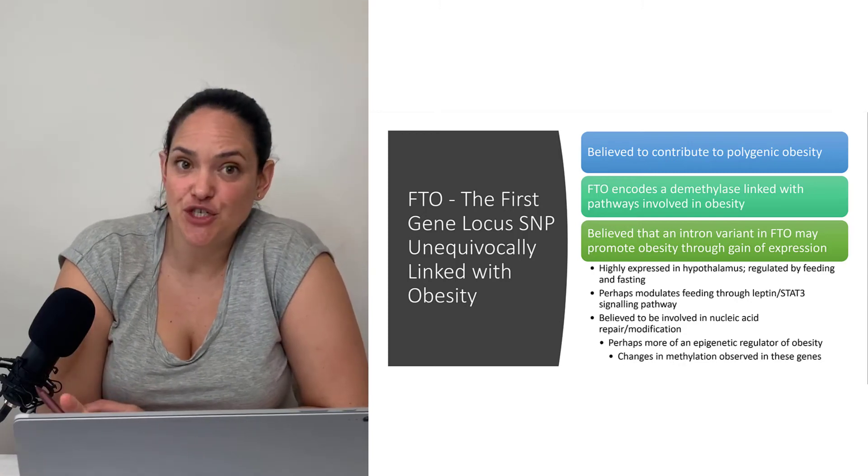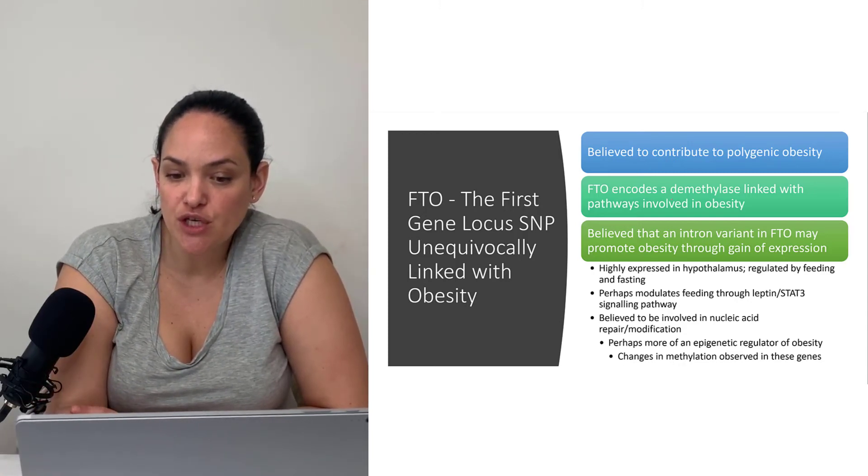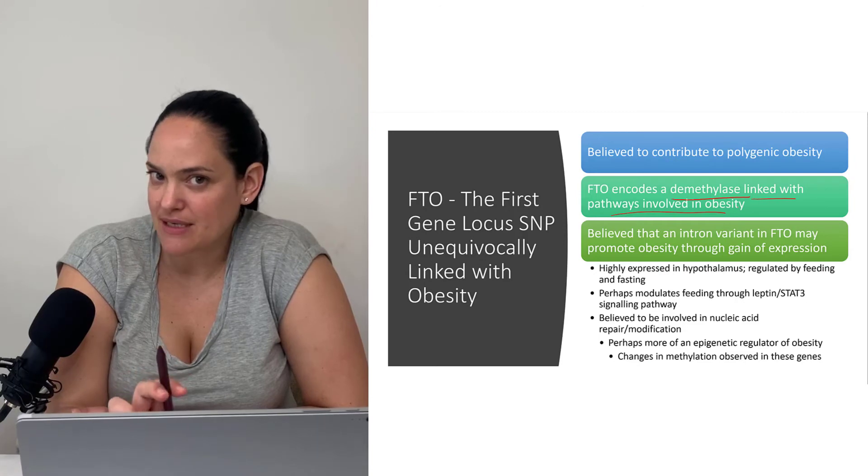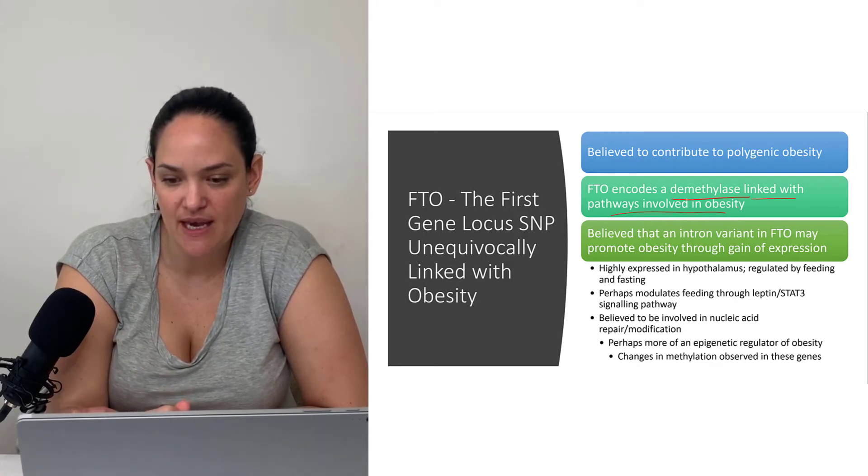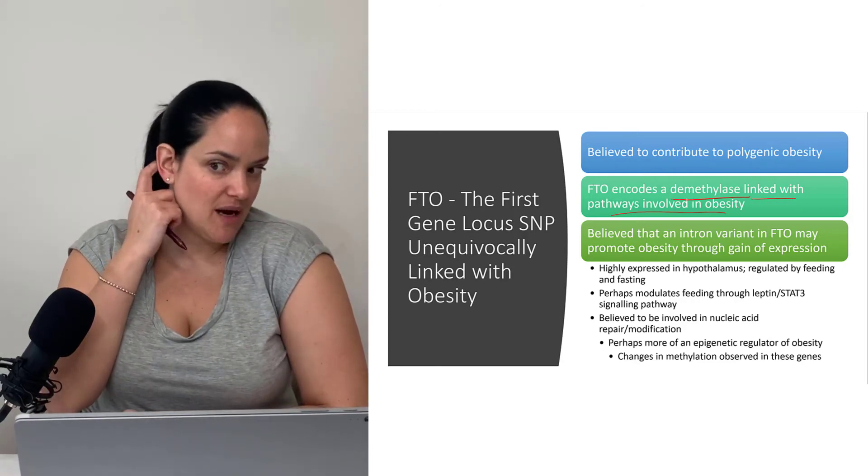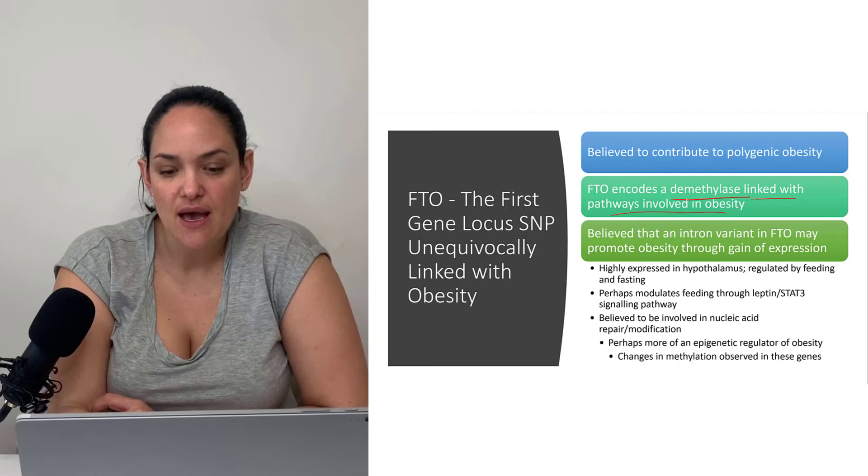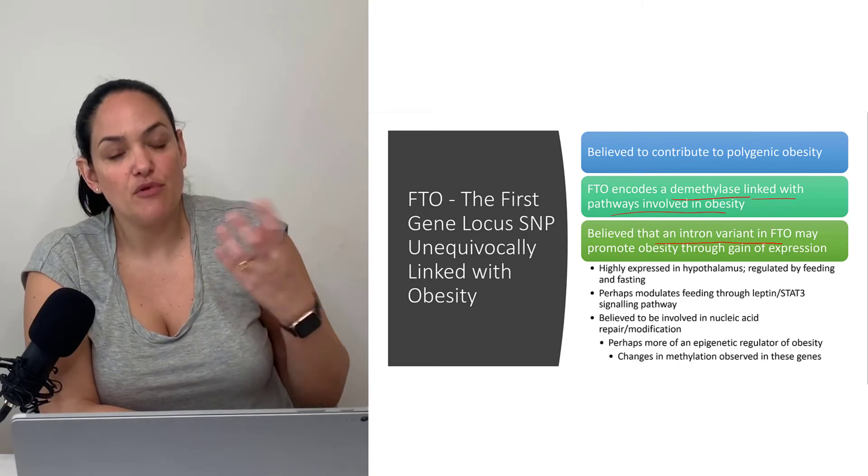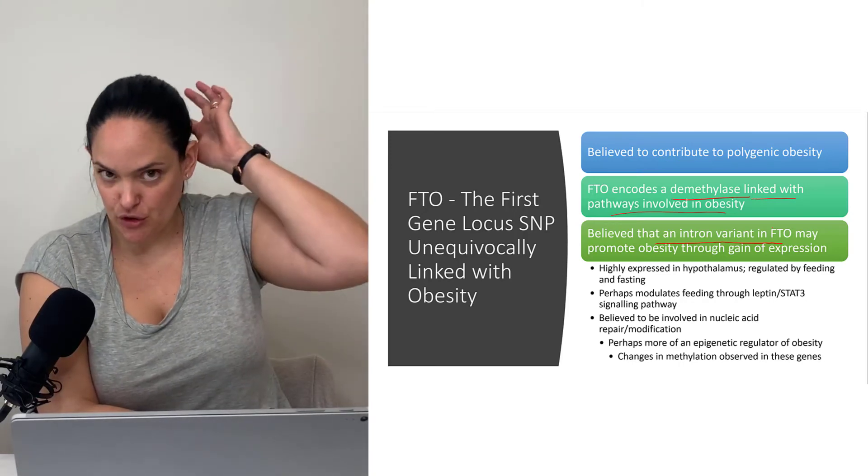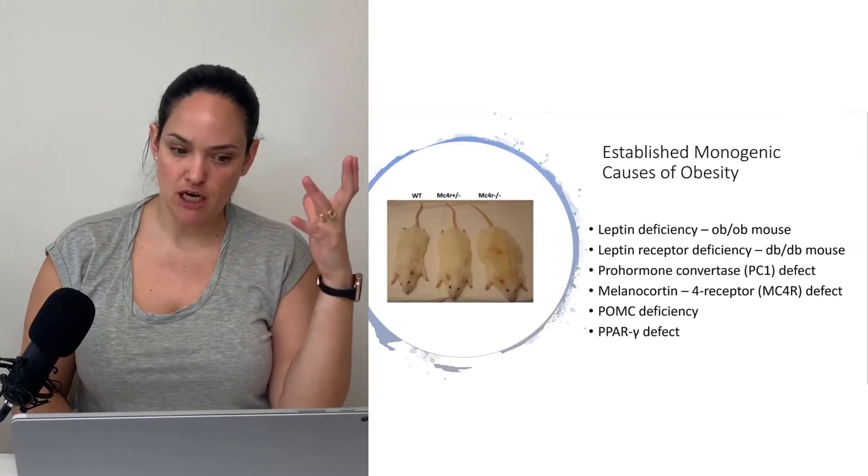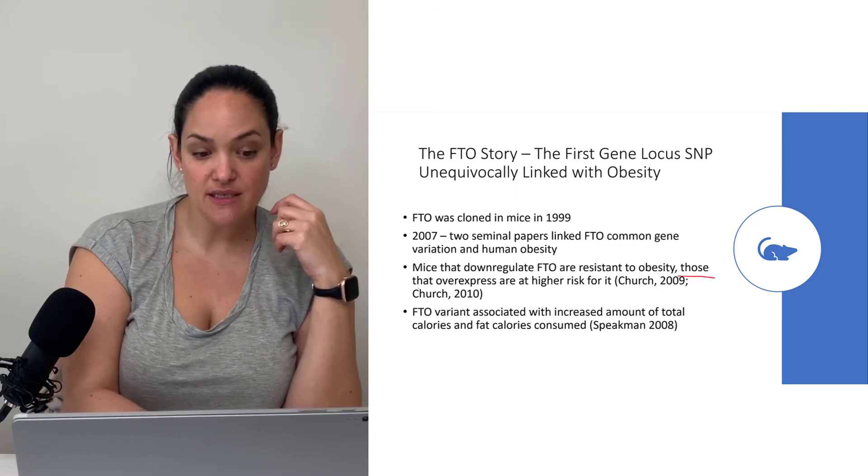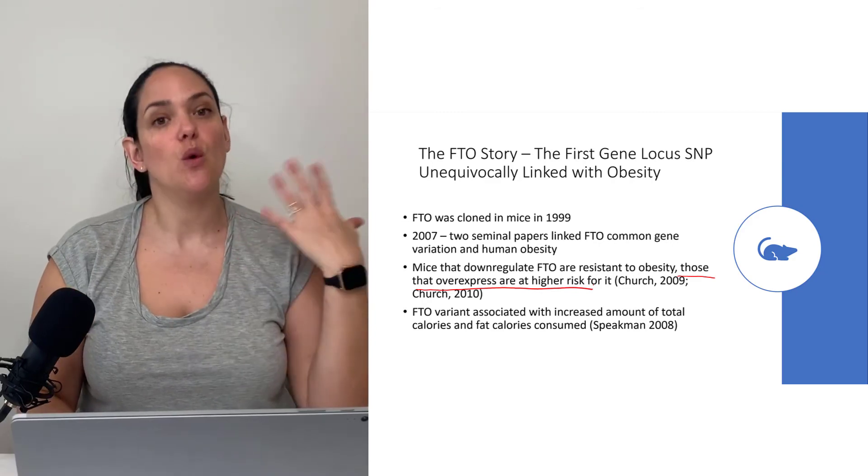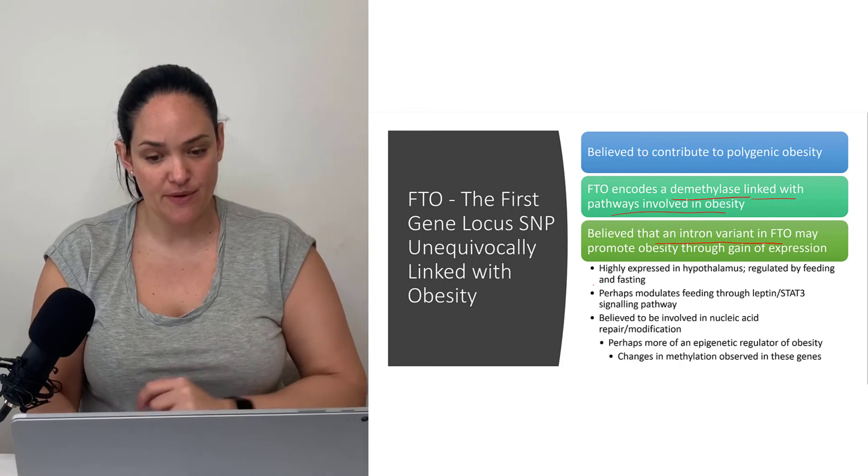As far as what this gene actually does, it is known to encode a demethylase that has been linked with certain pathways involved in obesity. We're going to get back to that when we talk about epigenetics and obesity. It is believed that if there's an intron variant in this FTO, it may promote obesity through gain of expression of that particular gene. Those mice that overexpress that FTO gene product were more likely to have obesity and to eat a lot of calories, especially fat calories.